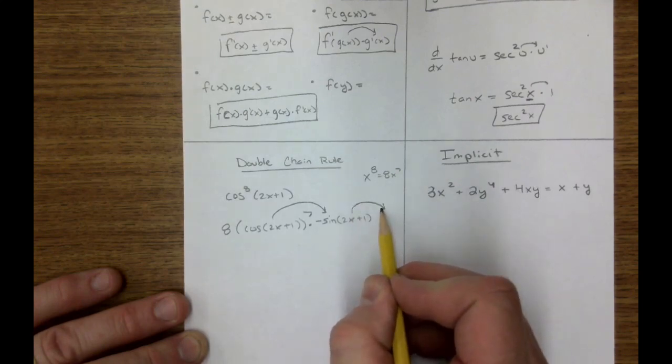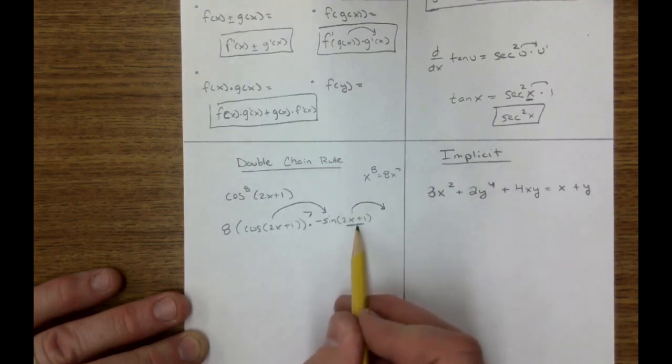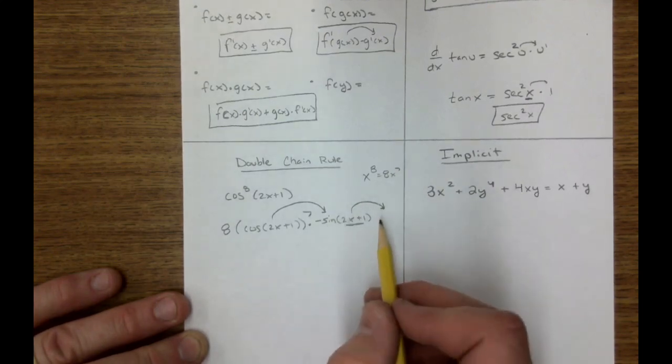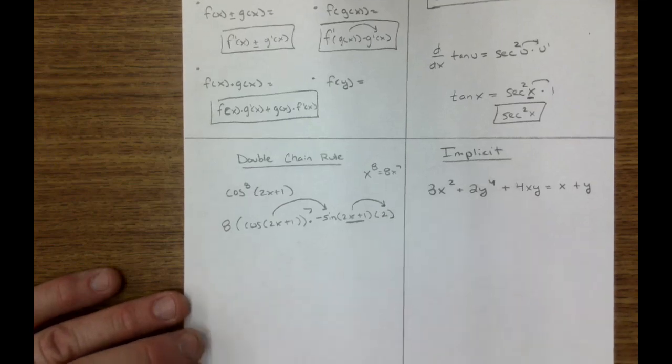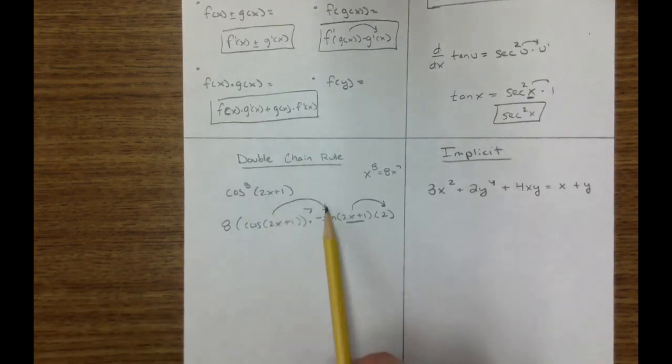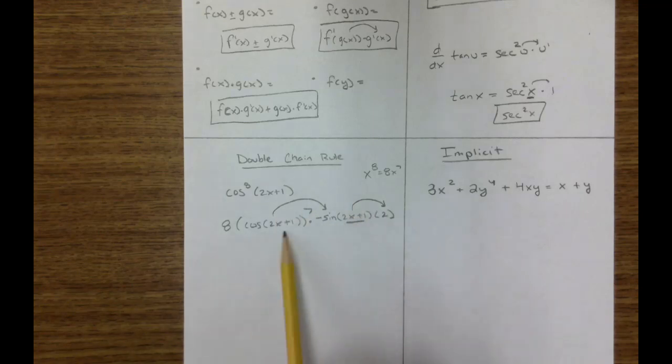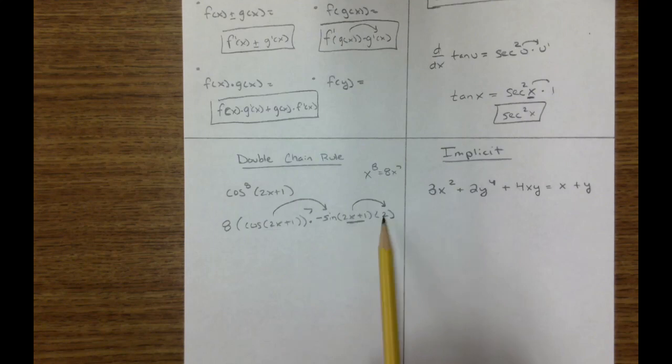But wait a minute, we have to go one more time, because this is inside the sine function. So, we have to multiply it by 2. That's why we have the chain rule, because it's power, and we just keep going down. We take this, we do the power rule, we get this, and then we take this. Now, we don't have to go any further with this, because this is not a composite function. There's nothing inside of 2.